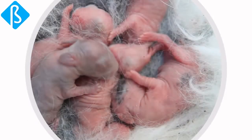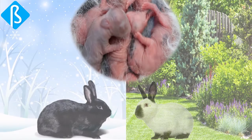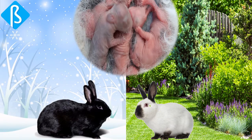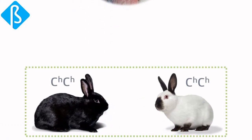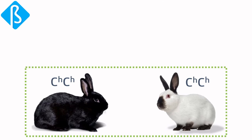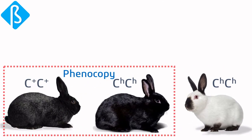Let's see another example. See these cute little baby rabbits — they are called Himalayan rabbits. If you raise one of them in cold conditions, it will be black in color, and if it is raised in moderate temperature, it is white with black patches on it. If we get a closer look at the genotype, they both have the same genotype.